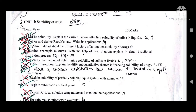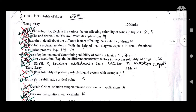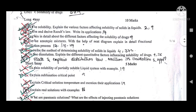The second question is: define and derive Raoult's law and write its applications. This is also very important and appears in many model question papers. The third question is: explain in detail the different factors affecting the solubility of drugs. This question is fixed in every examination.